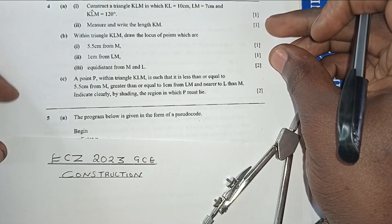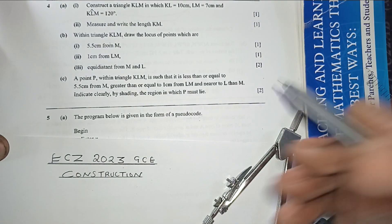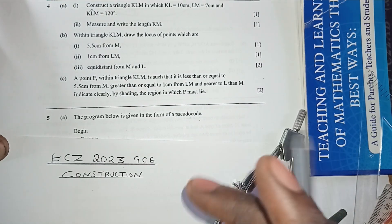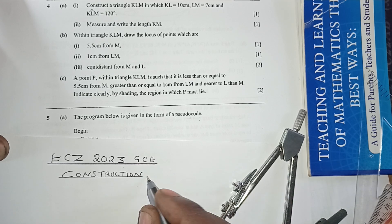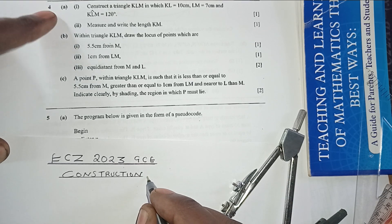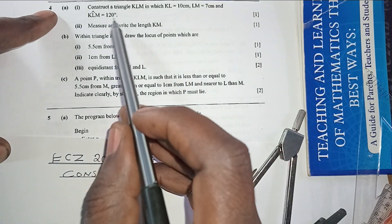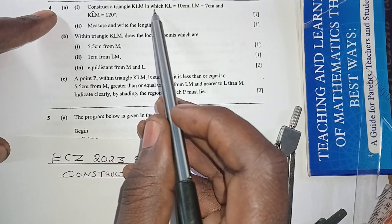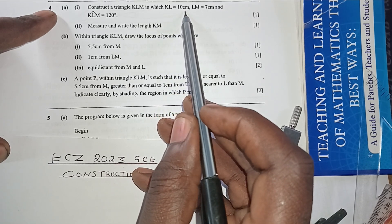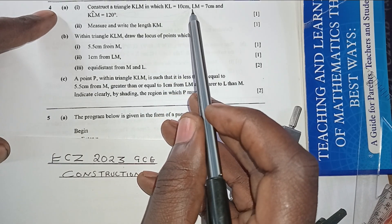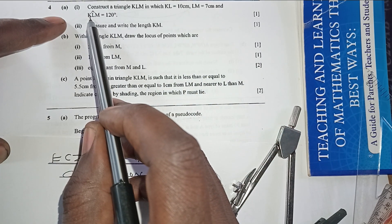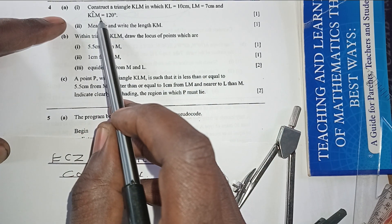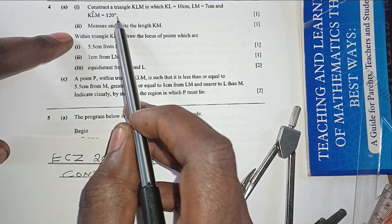Welcome to this video where we look at the 2023 examination paper for the GCE, specifically question number four. The first part says: construct triangle KLM in which KL equals 10 centimeters, LM equals 7 centimeters, and angle KLM equals 120 degrees.